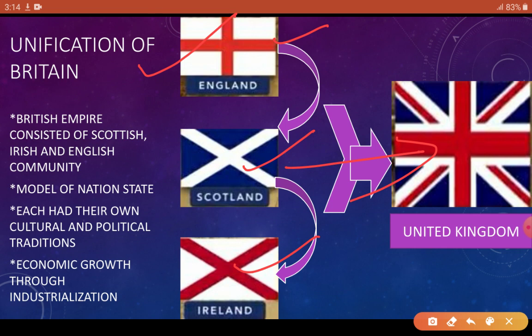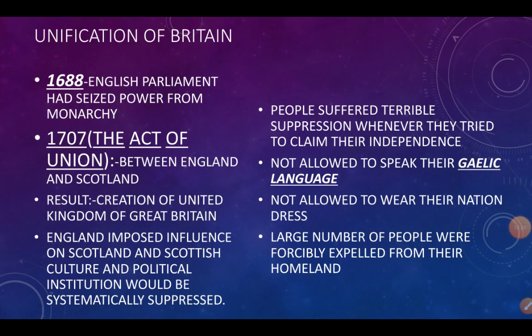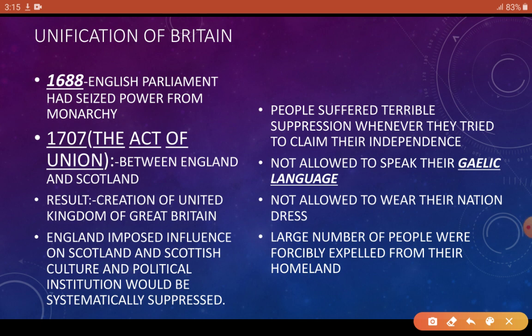Due to industrialization, England had a lot of money, and because of that wealth, the middle class became strong in England. The middle class — educated people, lawyers, doctors — entered Parliament, making it strong. And in 1688, they went to the monarch and said to hand over power to Parliament. This established a constitutional monarchy — the king would rule, but his power would be controlled by Parliament. So in 1688, the English Parliament curtailed the monarch's powers.